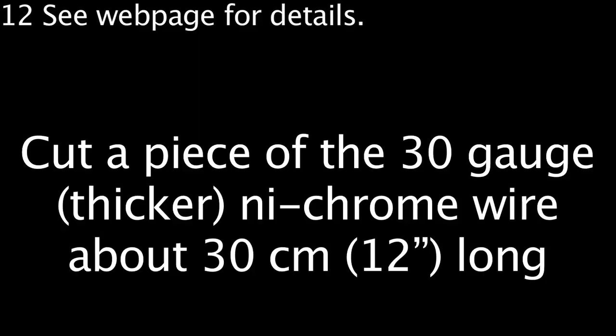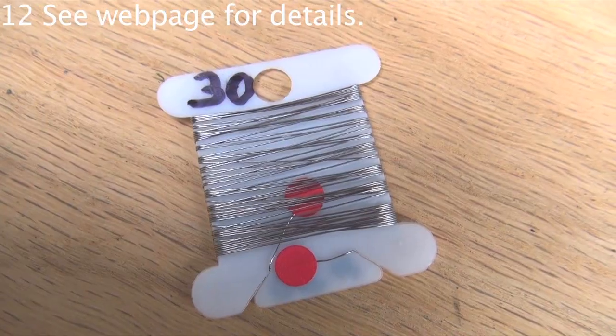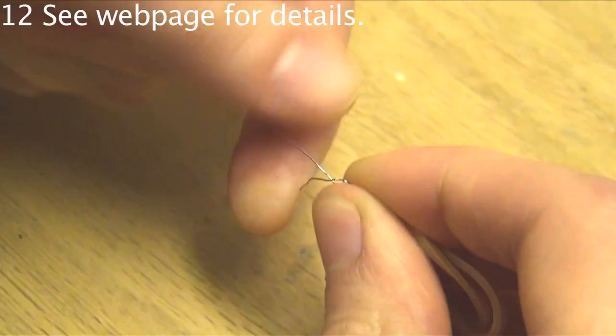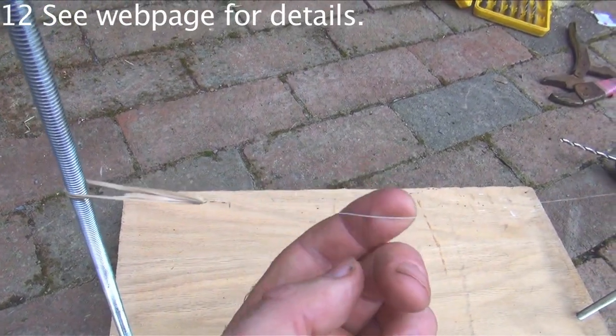Thread the rods in until they're sturdy. Cut a piece of 30 gauge, that's the thicker nichrome wire. Twist the ends onto rubber bands so that the rubber bands are always stretched when strung on the rods.